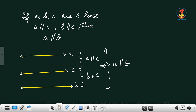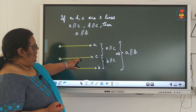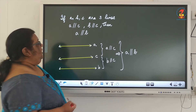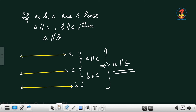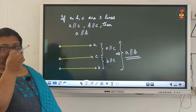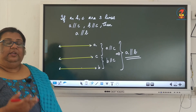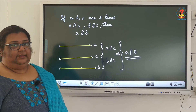Finally, suppose there are three lines A, B, and C such that A is parallel to C and B is parallel to C. Then we can say that A is parallel to B. So A parallel to C and B parallel to C implies A and B will also be parallel lines. These are the theorems we need to learn when a transversal cuts two parallel lines.